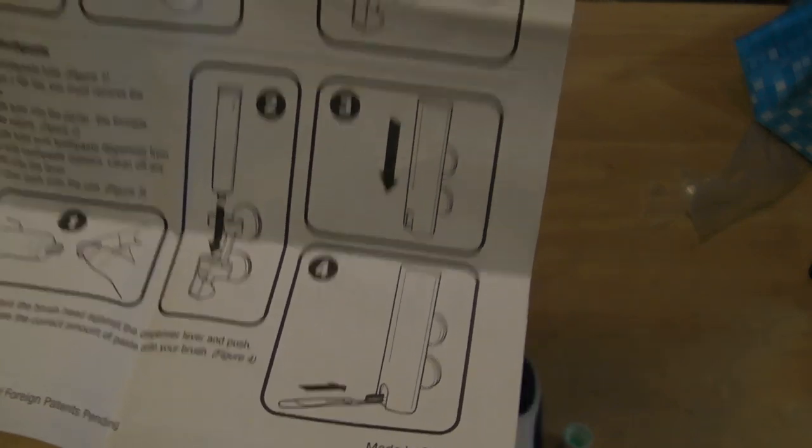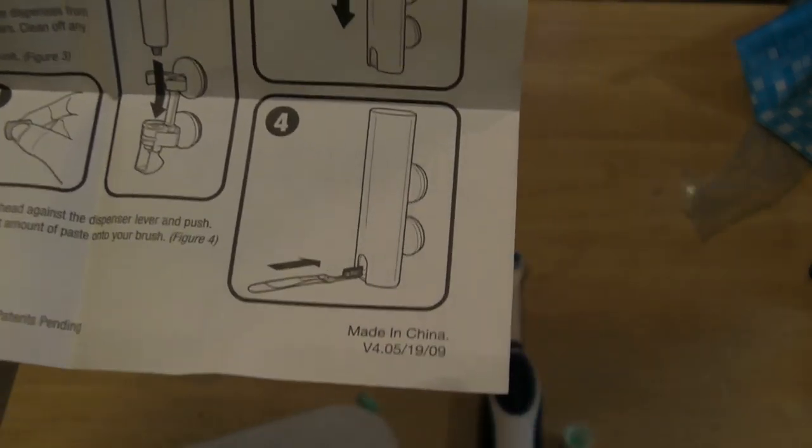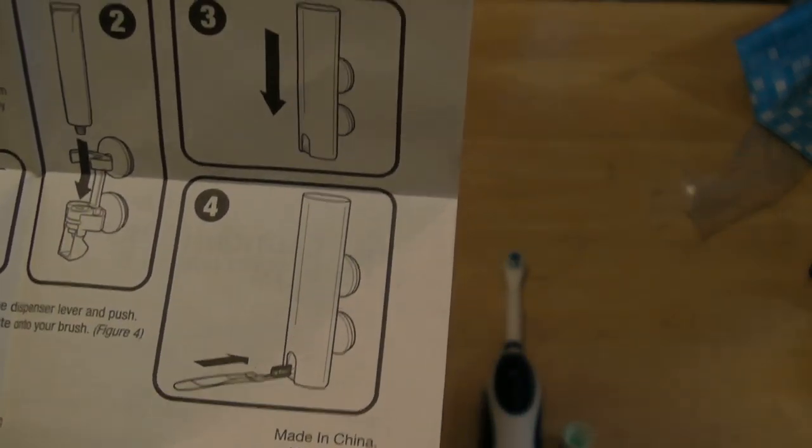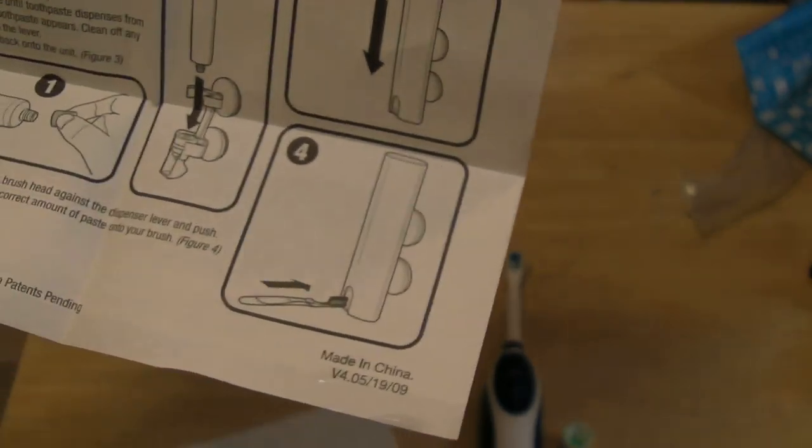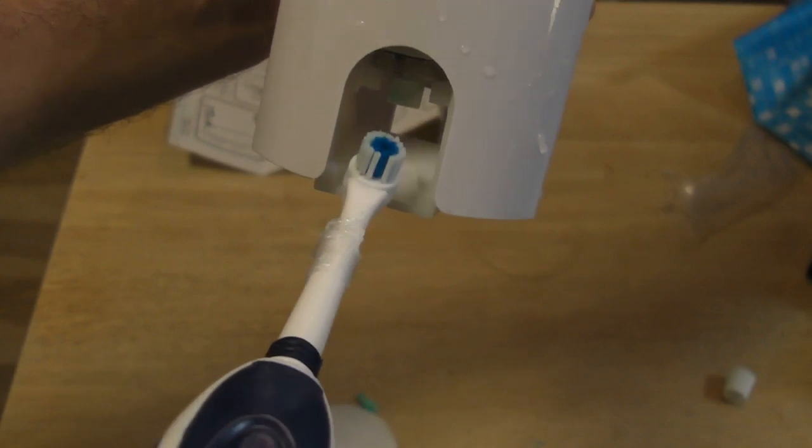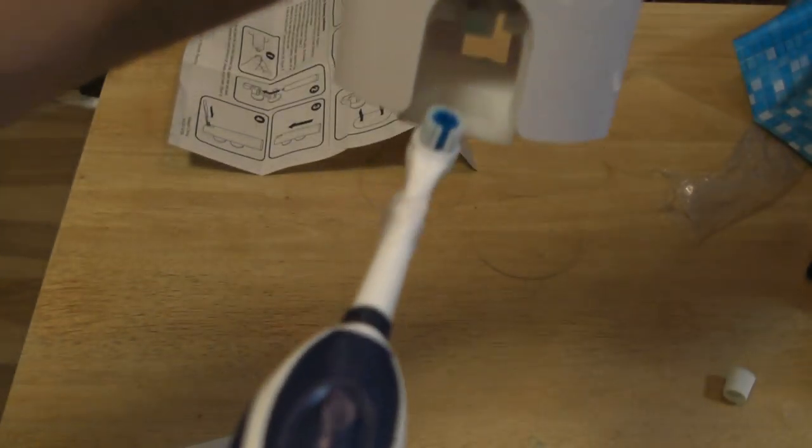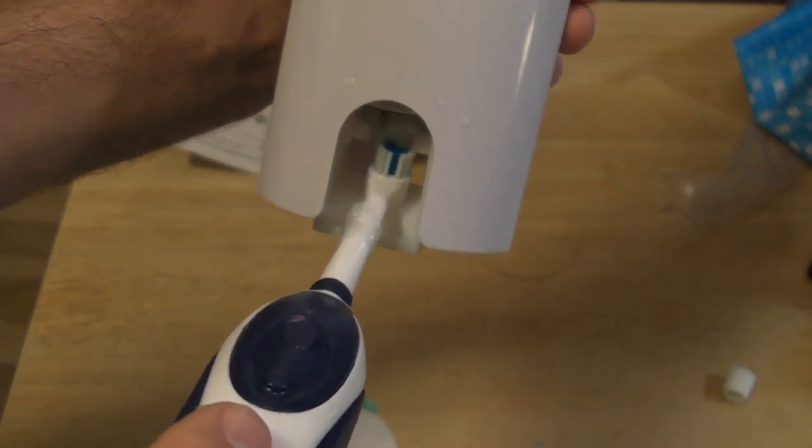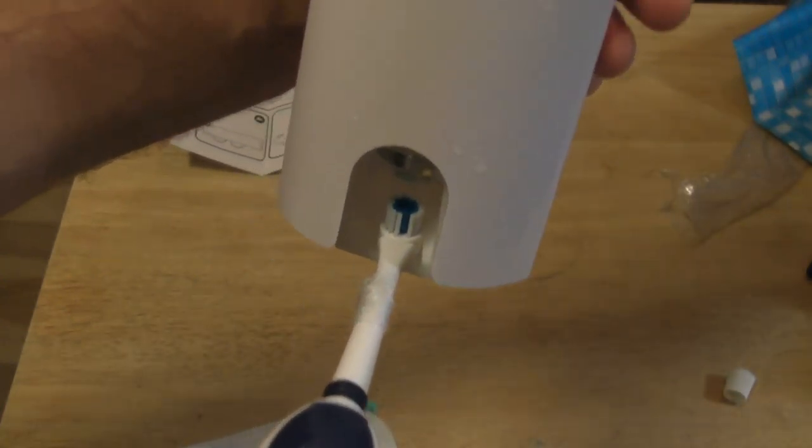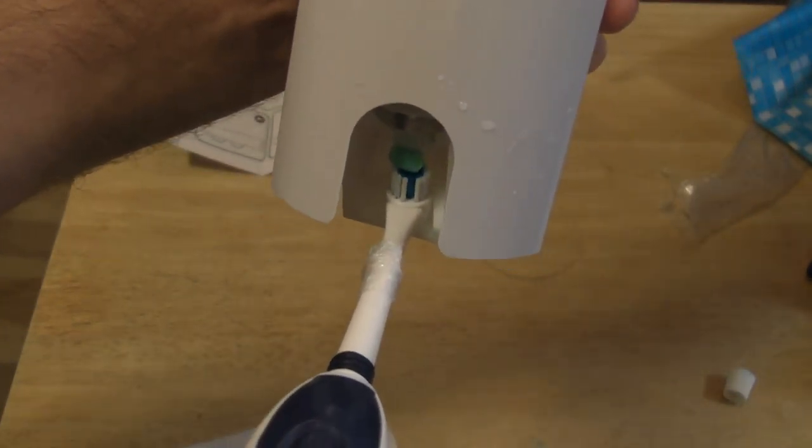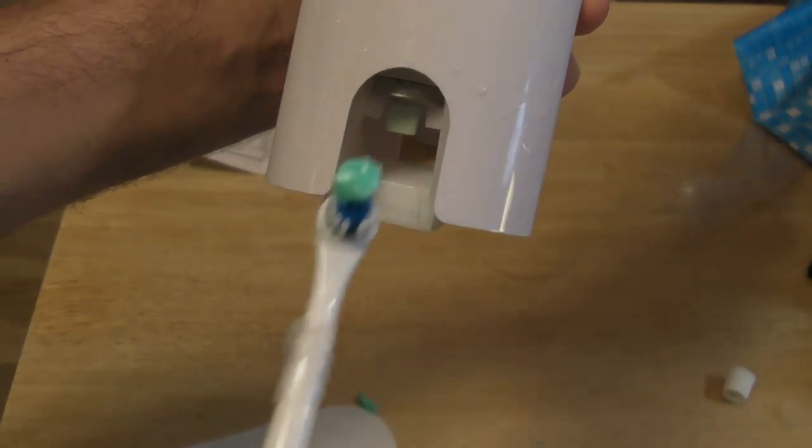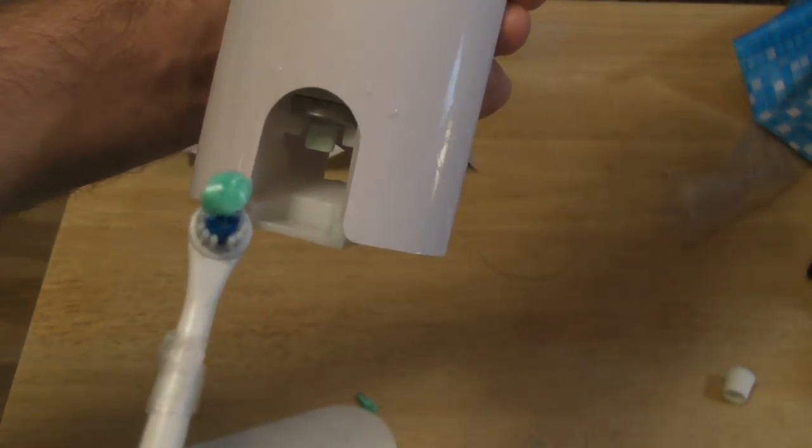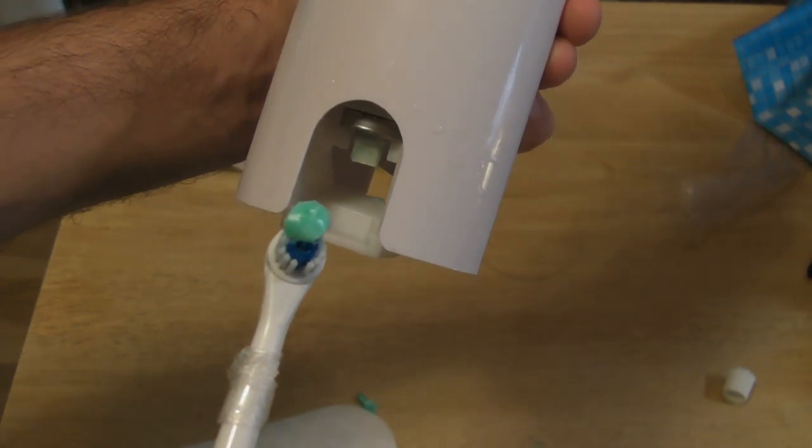Okay, so in the directions, it clearly shows that you push forward to dispense the toothpaste. Okay, so I think I figured it out. You don't hold the toothbrush right here. You put the toothbrush on this plastic piece right here below this little rubberized dispenser thing. So, you push forward like that, and there you go. And the toothpaste comes out onto the brush, just like the advertiser claims.